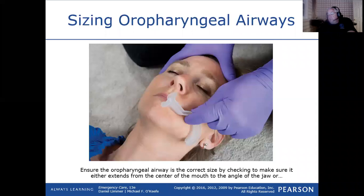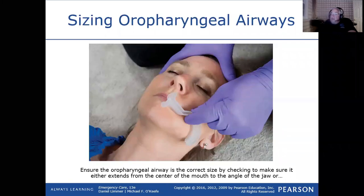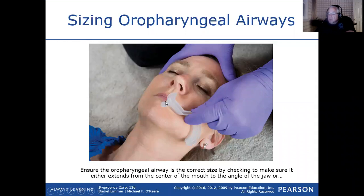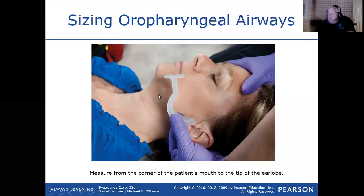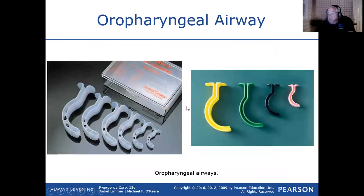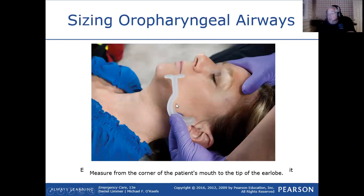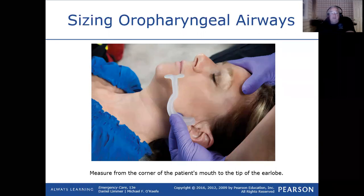There are two ways to size the OPA. One method: from the center of the mouth to the angle of the jaw — that's how it actually sits in the airway, so this is the preferred method. The other method: from the corner of the mouth to the earlobe. Either method works. Someone noted the second option works better for people with beards.